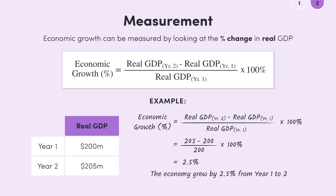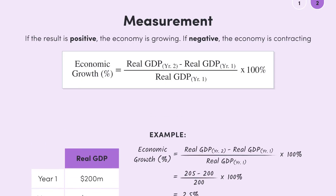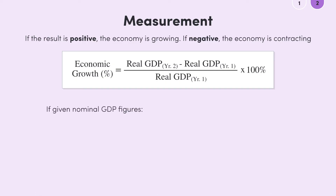In this example, we got a positive number, meaning that the economy is growing. If we get a negative number, the economy is contracting or getting smaller. Now, the story gets a little more complicated if we're given nominal GDP figures and asked to find the rate of economic growth.